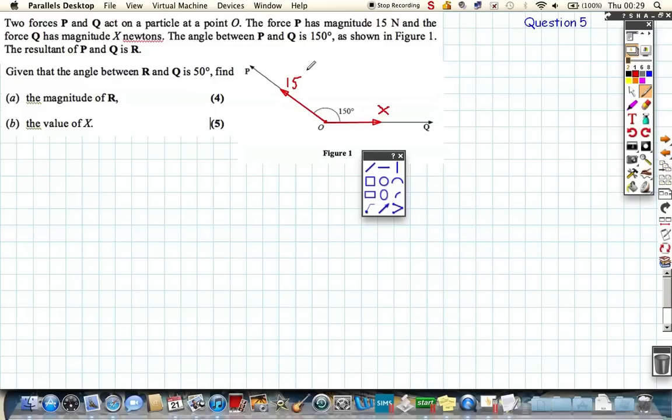And the resultant of P and Q. So we could, in theory, replace this P and Q with a single force acting somewhere in this direction. And that force would be the resultant force R, where we know that the angle of R is 50 degrees.